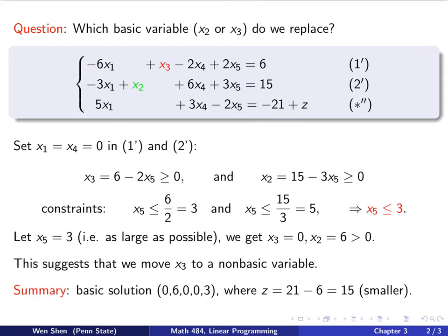We can summarize. Now the new basic solution after switching x5 and x3 as the row of basic and non-basic variables, we'll have a new basic solution that is x2 is 6 and x5 is 3. Those are the basic ones. And x1, x3, x4 are 0. So this is the solution. And in that solution, what will be the z value?